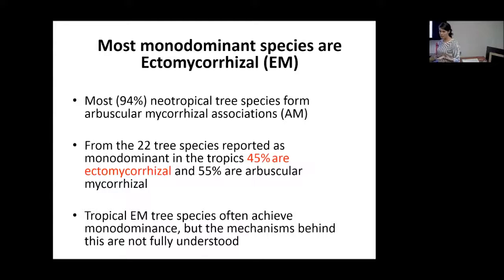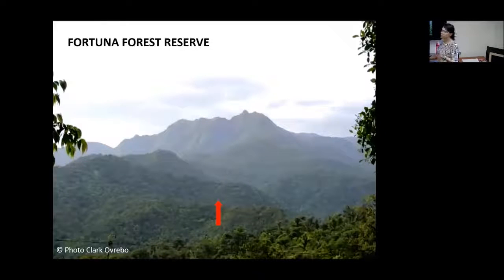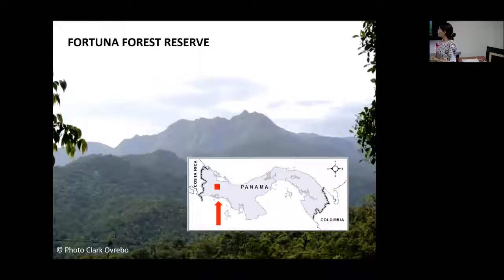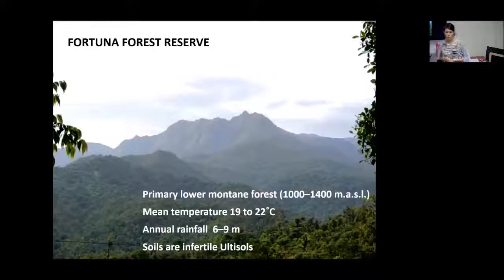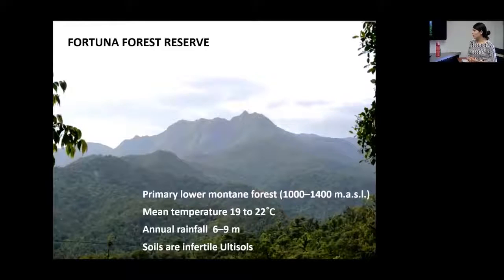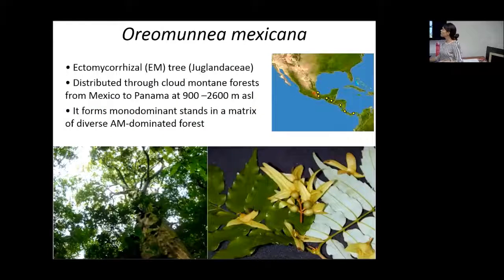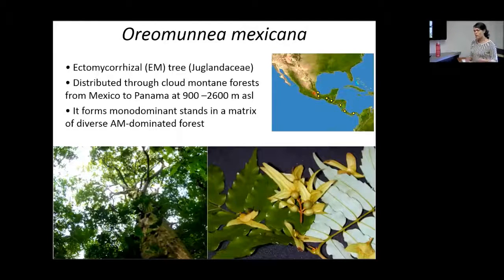The mechanisms behind it are not fully understood. My study area was in Panama, in the west very close to the Costa Rica border, at the Fortuna Forest Reserve, which is a primary lower mountain forest with temperatures between 19 and 22°C and about 6.9 meters of rain per year. Soils are relatively infertile. My focus species is Oremunia mexicana, a Juglandaceae species that forms ectomycorrhizal associations, distributed in cloud mountain forests from Mexico to Panama, and it forms monodominant stands surrounded by an arbuscular mycorrhizal-dominated forest.